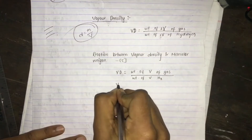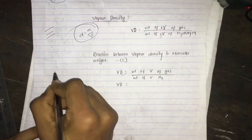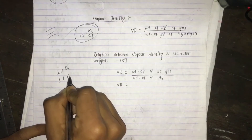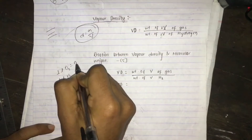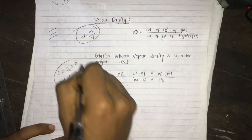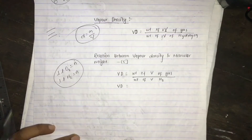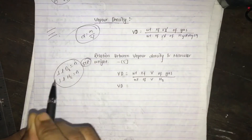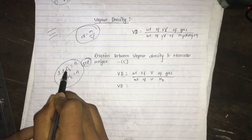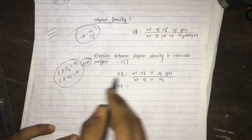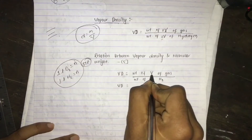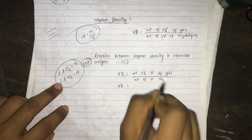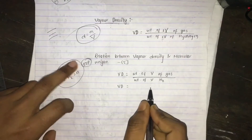Vapor density is equal to the ratio involving 1 liter of gas and 1 liter of hydrogen. So vapor density applies to equal volumes — for example, 1 liter, 2 liters, 4 liters, or 5 liters — always comparing the same volume of gas to the same volume of hydrogen.